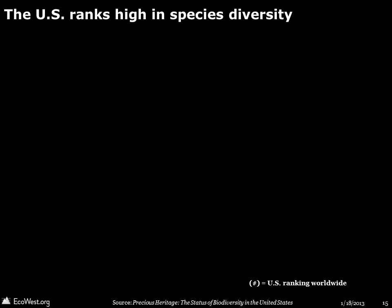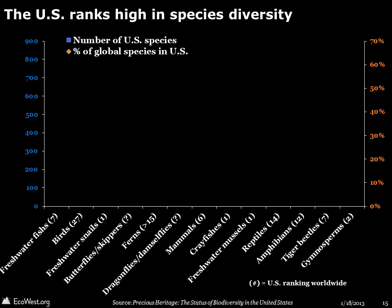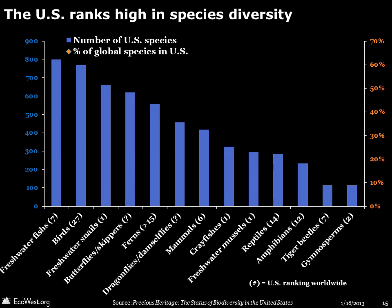So it's no surprise that the US also ranks high in species diversity. The blue bars show the number of species found in the US broken down by species type, and the orange diamonds show what percent of world species are found in the US. The highest levels of diversity for several species groups are found in the US, including freshwater mussels, freshwater snails, and crayfish. Several other taxonomic groups, such as freshwater fishes and gymnosperms, are also well represented in the US.